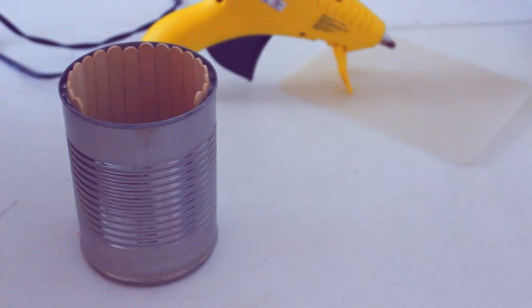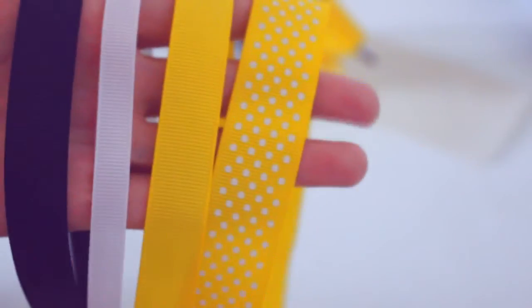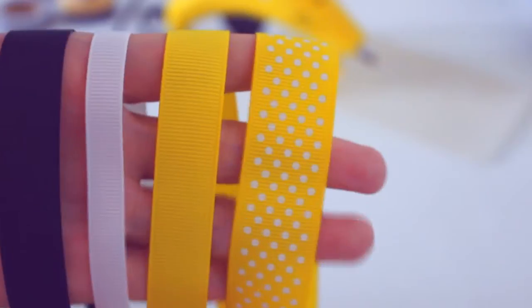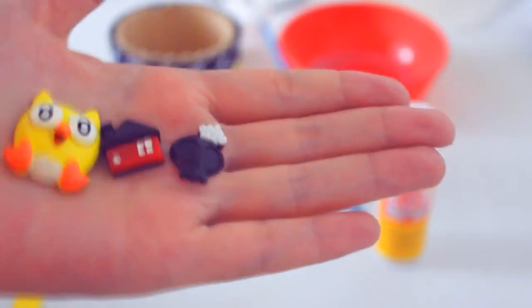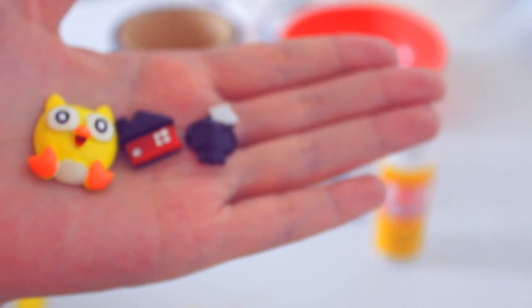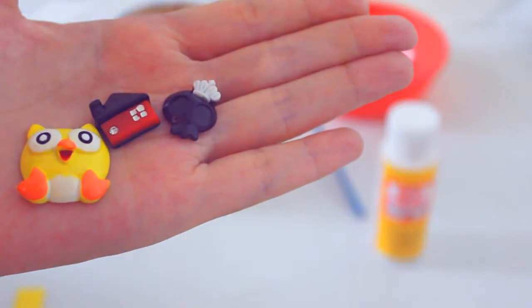For this DIY, you will need an empty tin can, about 20-30 popsicle sticks depending on how big your tin can is, and also hot glue or Mod Podge, whatever glue you think will work for your decoration. Also Halloween related ribbons—I'm using grosgrain ribbons—and of course, we cannot forget the cabochons. I picked out the ones that I think will work great for this color theme.